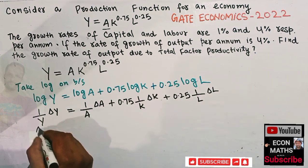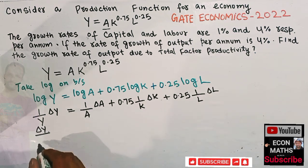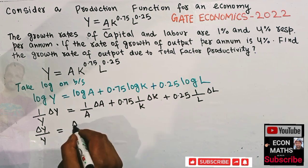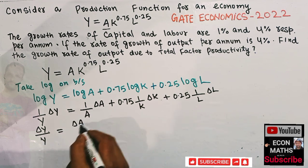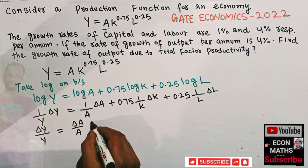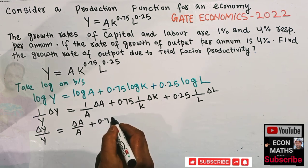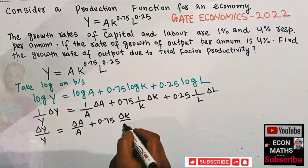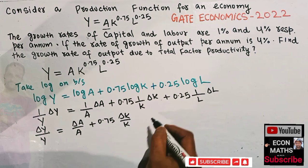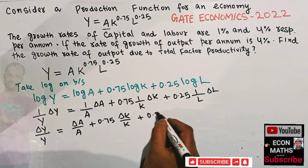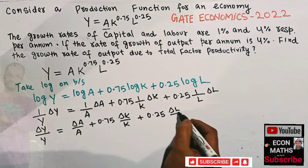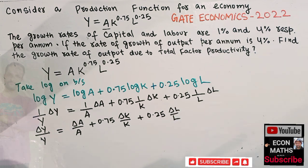Rearranging, we get: dy/y = dA/A + 0.75 × (dK/K) + 0.25 × (dL/L).